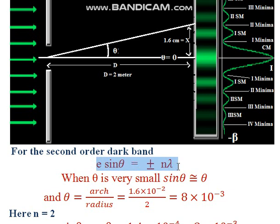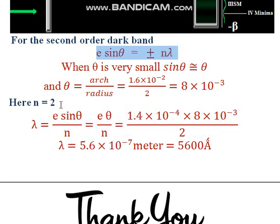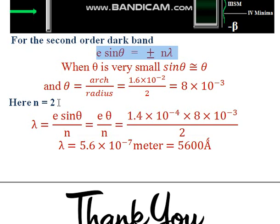Using the equation for all minima, and since θ is very small for light — diffraction being very minute in the case of light — we can apply the small angle approximation: sinθ ≈ θ. This gives θ = arc/radius = 8×10⁻³ radians, obtained from the geometry of the triangle. Applying the formula λ = e·sinθ/n, with sinθ ≈ θ, this simplifies to λ = e·θ/n.